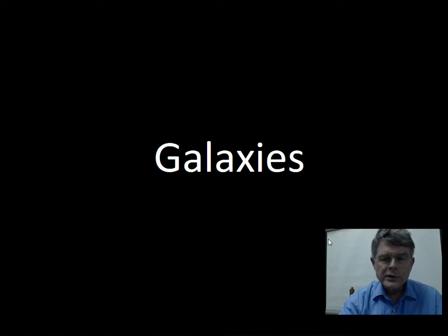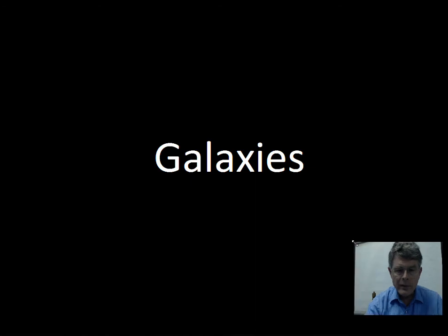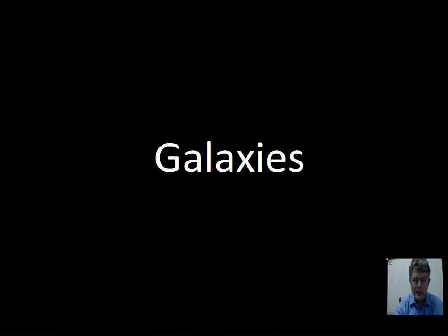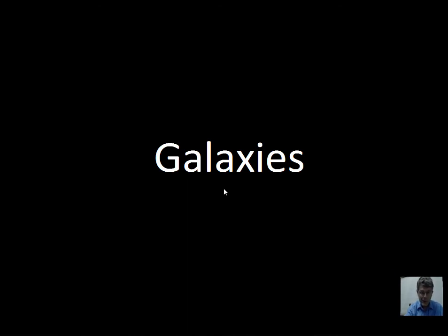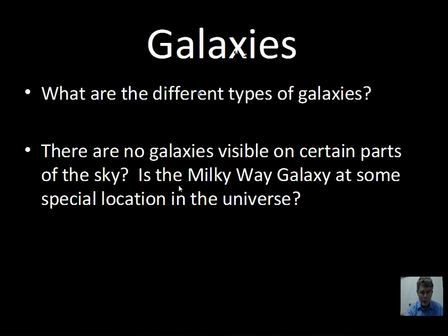This video starts a series of videos that will talk about the different kinds of galaxies in our universe and their distribution. This video has a tangent topic at the start — the Messier catalog — and then we'll talk about the zone of avoidance, where we see galaxies on the sky and where we don't.